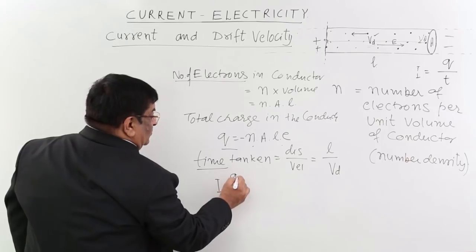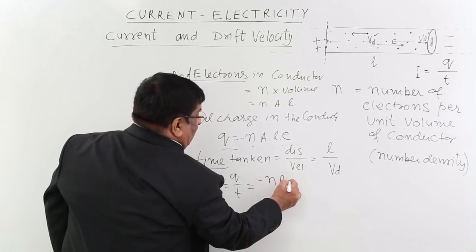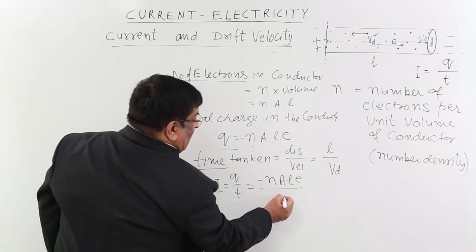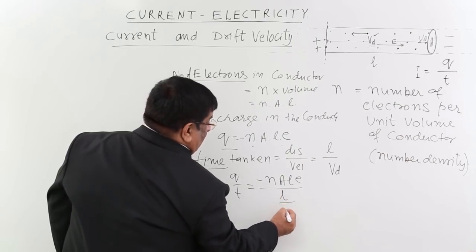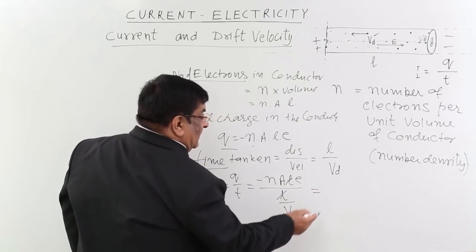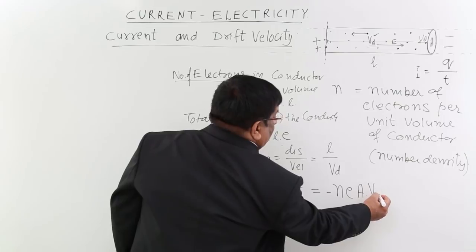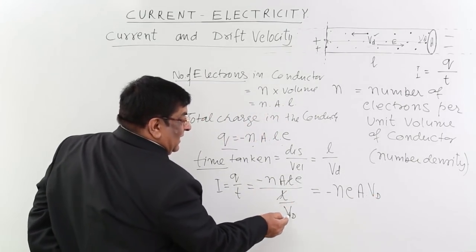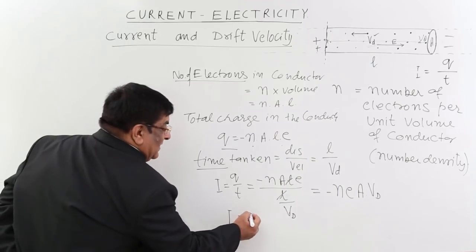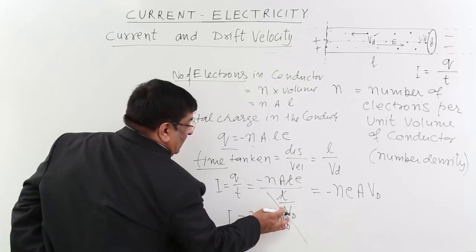Charge is Q = −n·A·L·e and time is t = L/V_D. Placing these into I = Q/t: I equals (−n·A·L·e) divided by (L/V_D). The L's cancel, and V_D comes to the numerator, giving I = −n·e·A·V_D. This is our measurement of electric current and how it is related to n, e, A, and drift velocity.